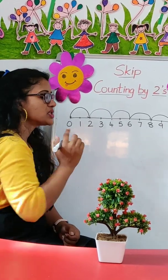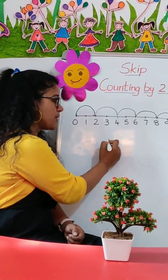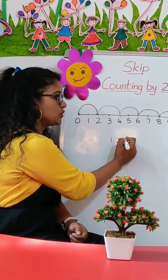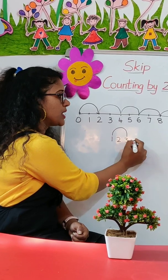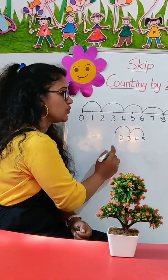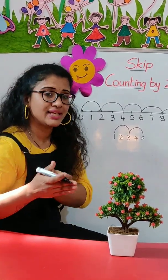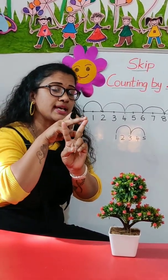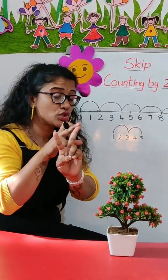That is from whichever point you are starting. Imagine if I am starting from number one, then I am going to skip the number two and jump to number three. I am going to skip four and jump to number five. So wherever your starting point is, you have to leave one number and skip to the second number — that is skip counting by two.